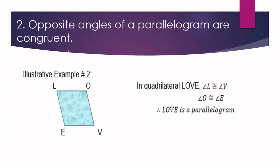Now let us proceed with number two: opposite angles of a parallelogram are congruent. We have quadrilateral LOVE. Based on the statement, angle L is congruent to angle B, and angle O is congruent to angle E. This guarantees that quadrilateral LOVE is a parallelogram, because if opposite angles of a quadrilateral are congruent, then the quadrilateral is a parallelogram.